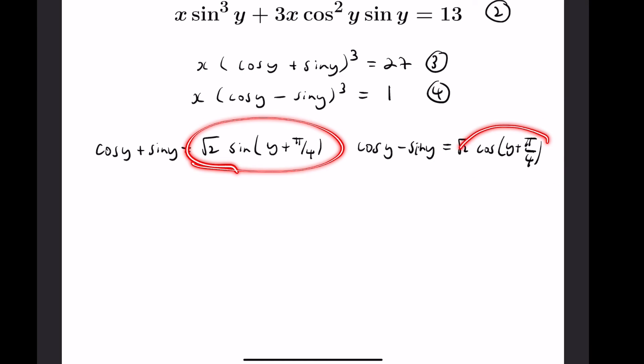But this quantity divided by this quantity is actually an explicit trigonometric function: it's tangent. So we would end up with the statement that tangent cubed of y plus pi over 4 equals 27.